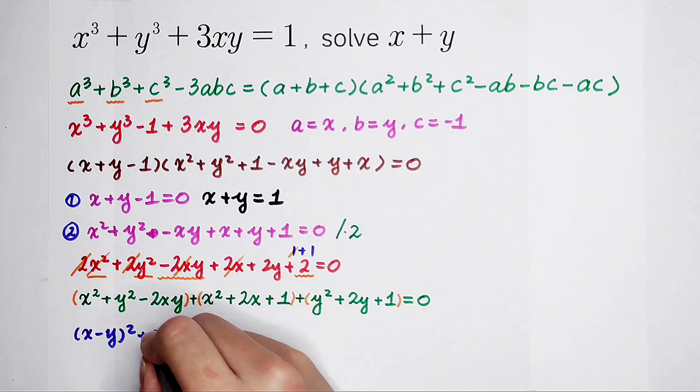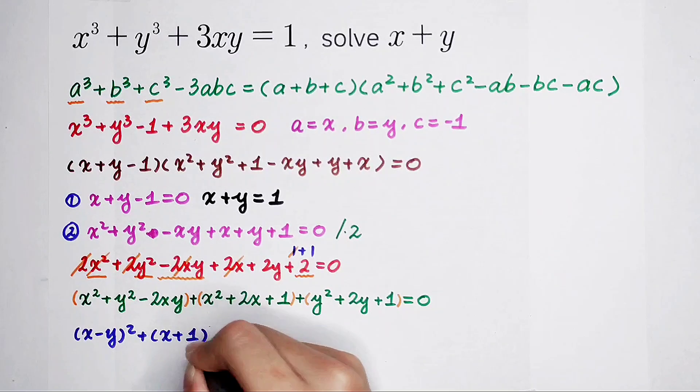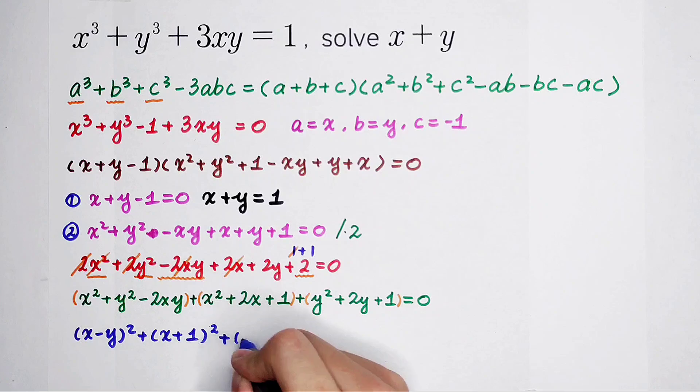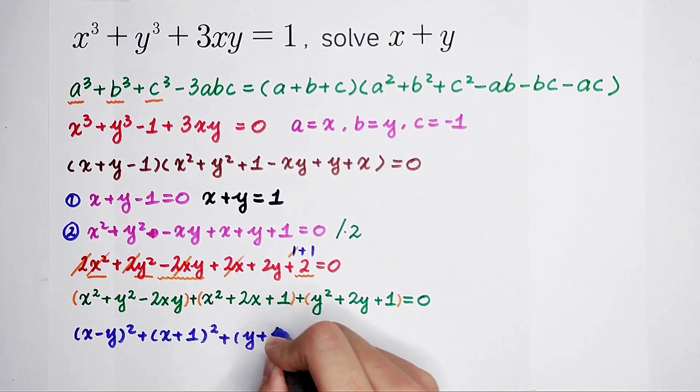This, use the first binomial formula, it is (x plus 1) all squared. This, also the first binomial formula, it is (y plus 1) all squared, equals 0.